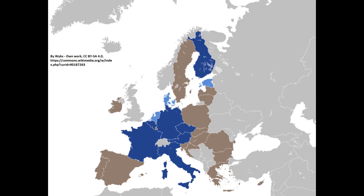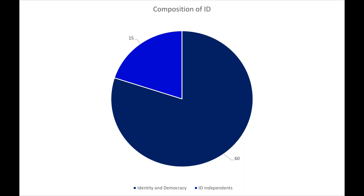It has 75 MEPs from 10 EU states: Austria, Belgium, the Czech Republic, Denmark, Estonia, Finland, France, Germany, Italy, and the Netherlands. Some of the main national parties in the group are the Freedom Party of Austria, Flemish Interest of Belgium, National Rally of France, Alternative for Germany, and Lega of Italy. It is headed by Marco Zanni of Italy. In terms of composition, 60 of its members are part of the Identity and Democracy party, while the remaining 15 are independent.